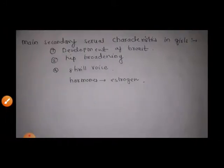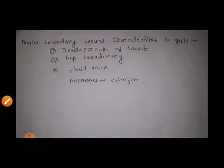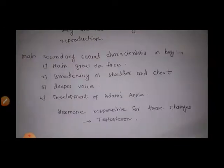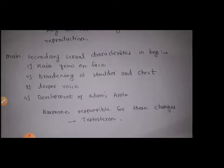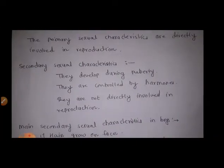The main secondary sexual characteristics developed in girls are: development of breasts, hip broadening, and shrill voice. These are controlled by the hormone called estrogen, which causes these characteristics to be produced in the body.